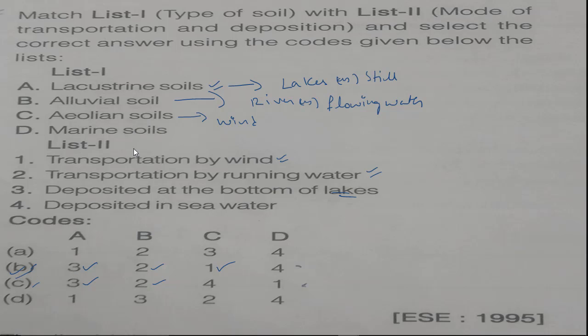But let's see D, what will be D. Marine soils are deposited by sea water generally. So D should be 4. So this is our answer. Our answer is B.